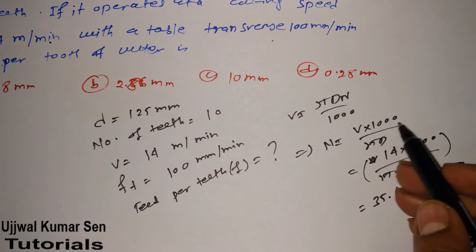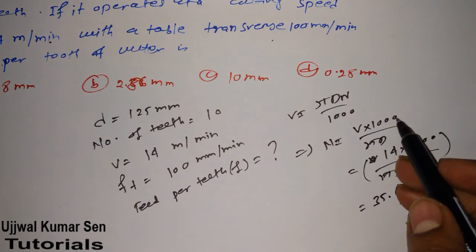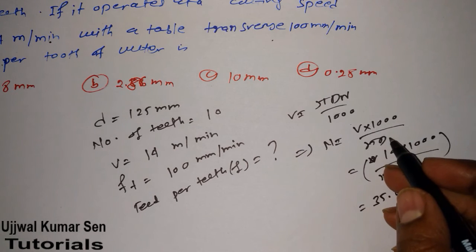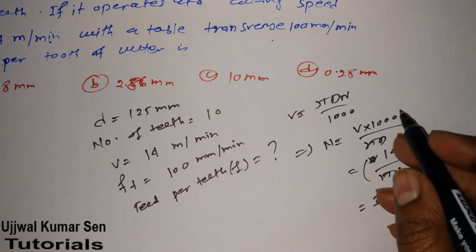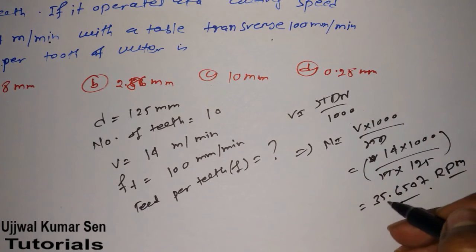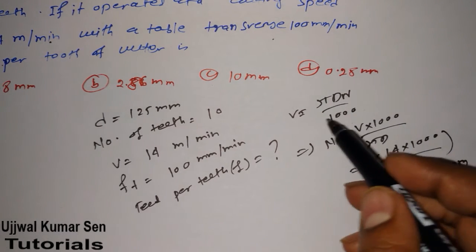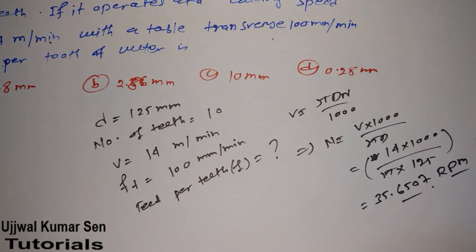Let's see the unit: V is velocity in meters per minute. Diameter is in mm, that's why we multiply with 1000 to make all units consistent, and time remains in minutes, which is why it becomes RPM. That's why the formula is this.